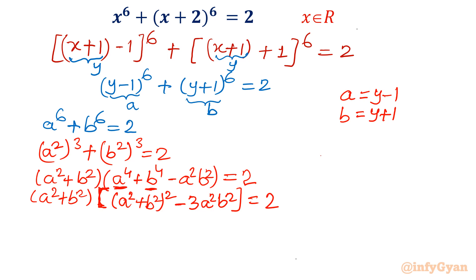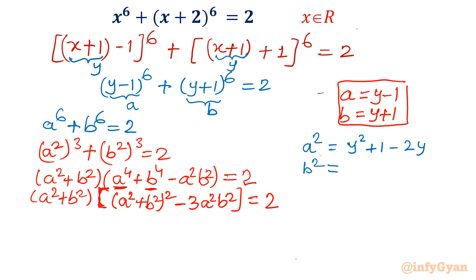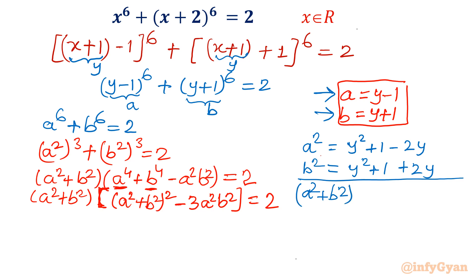Now things look easier since a and b are known. We use a and b to write a²+b² and a²b². We have a² = y²+1-2y and b² = y²+1+2y. Adding: a²+b² = 2(y²+1), since the 2y terms cancel. For a²b², we note the product (a²)(b²).